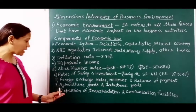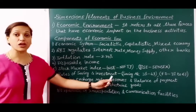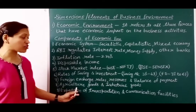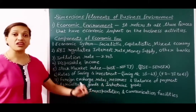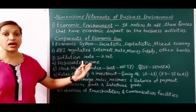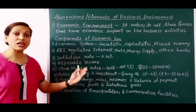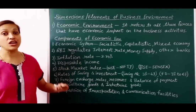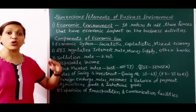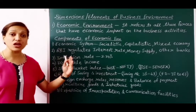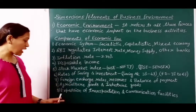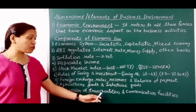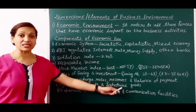The next component is agriculture goods and industrial goods. If agriculture production and industrial production increase in India, then along with individual income, national income will also increase and our economic condition will improve.